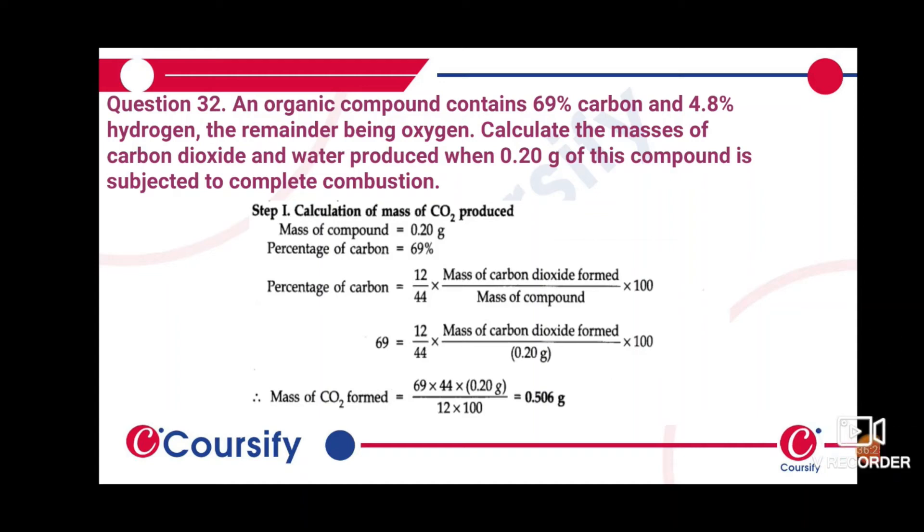An organic compound contains 69% carbon and 4.8% hydrogen, the remainder being oxygen. Calculate the masses of carbon dioxide and water produced when 0.2 gram of this compound is subjected to complete combustion.